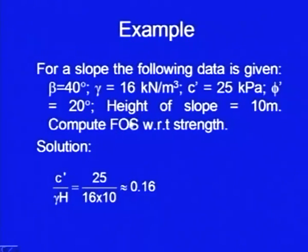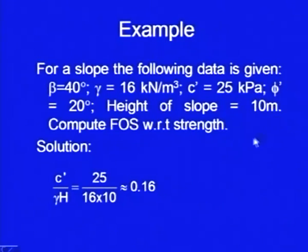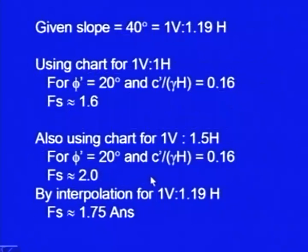Let us again take an example. There is a slope with data as follows: β = 40°, γ = 16 kN/m³, c' = 25 kPa, φ' = 20°, height of slope is 10 meters. In fact, it is the same problem which we solved sometime back and we have to compute the factor of safety with respect to strength. Take up these parameters: c'/(γ·h) comes out to be 0.16. So on the y-axis you have to look for 0.16 and the given slope is 40°. When I convert it into the vertical-to-horizontal term, it comes out to be 1 vertical and 1.19 horizontal.